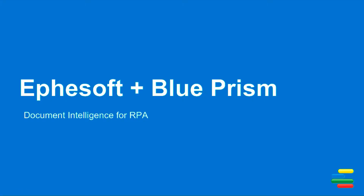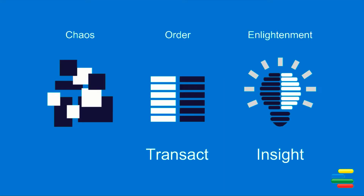This video will give you a quick overview of how FSOF can provide Blue Prism an added layer of intelligence when it comes to document processing in RPA. If you aren't familiar with FSOF, we provide solutions for unstructured data in the form of documents. Through our smart capture platform, we can take that data and turn it into actionable information.